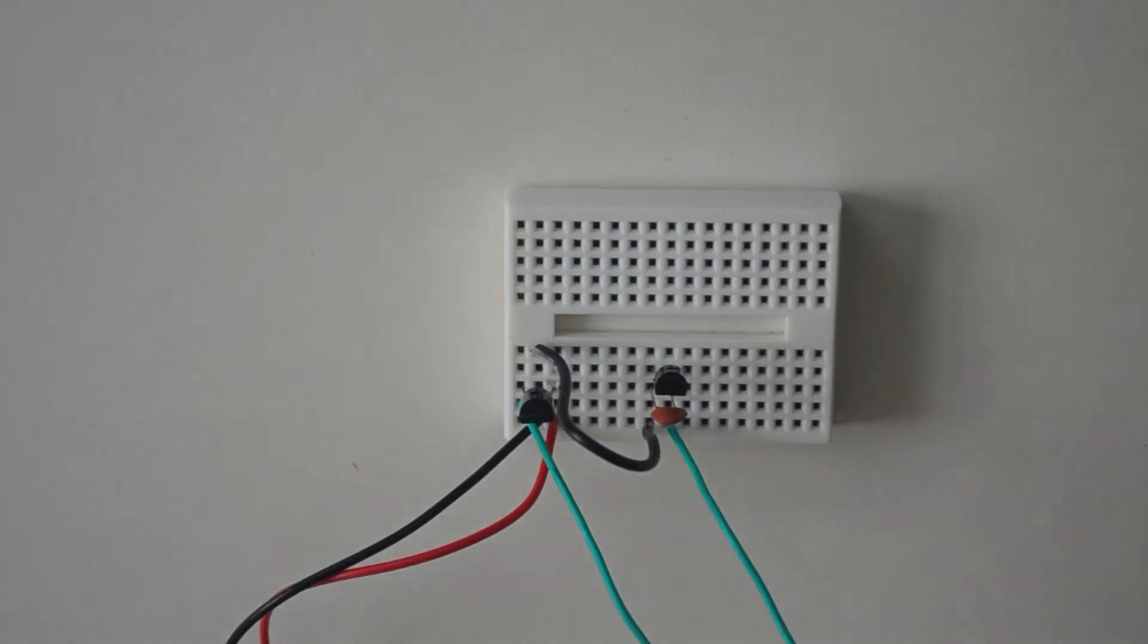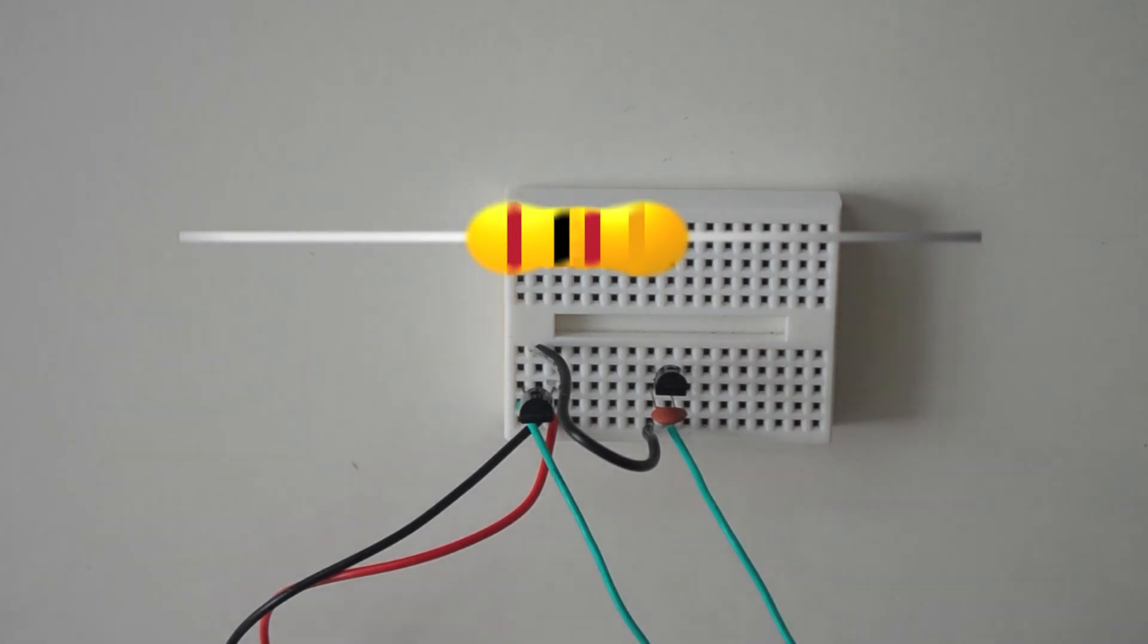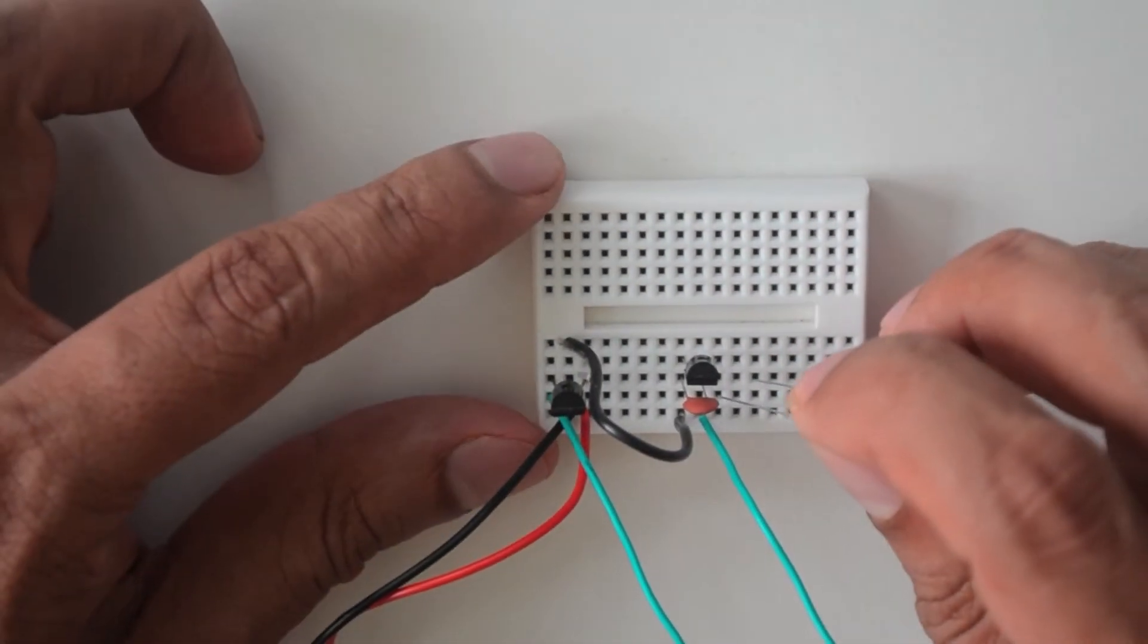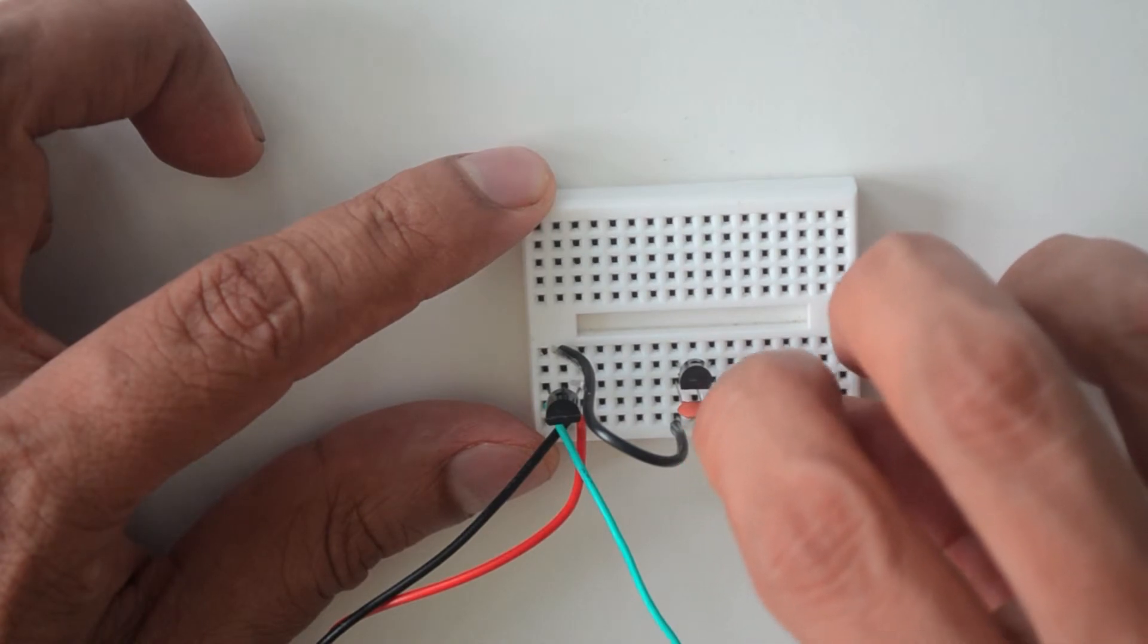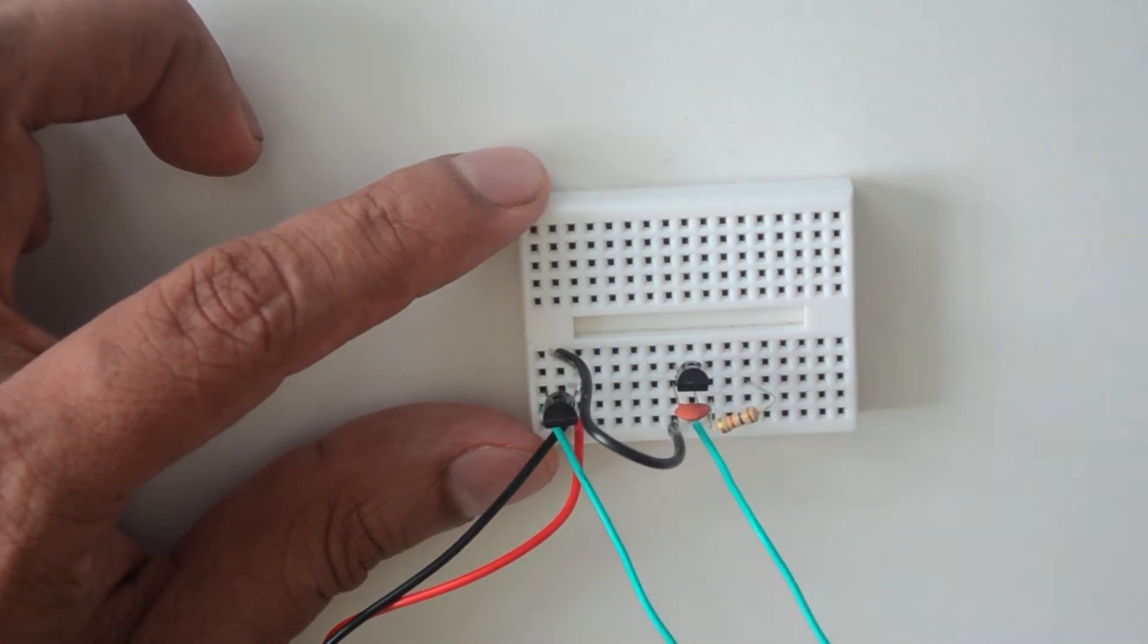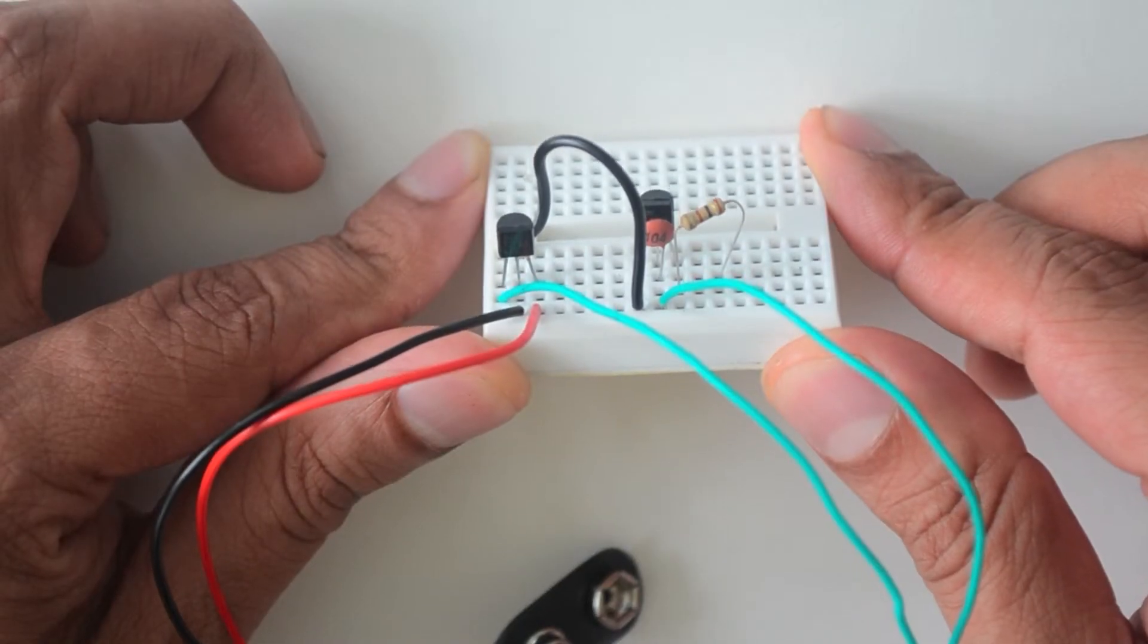Bend the legs of a 100 ohm resistor, identified by the color bands brown, black, brown, and gold, and place one leg in a pin hole just below the rightmost pin of the transistor and the other leg in the sixth pin hole of the third row of the lower right side of the breadboard.